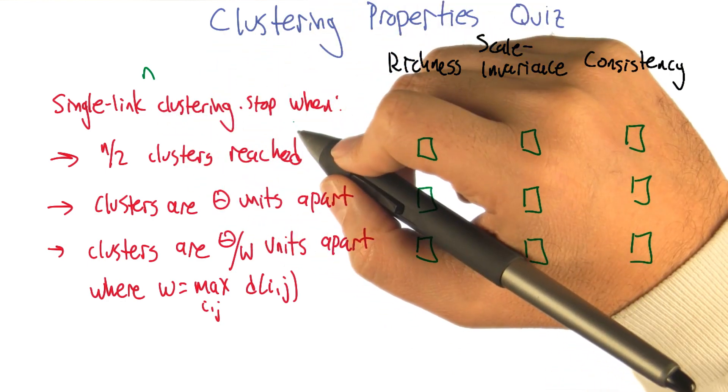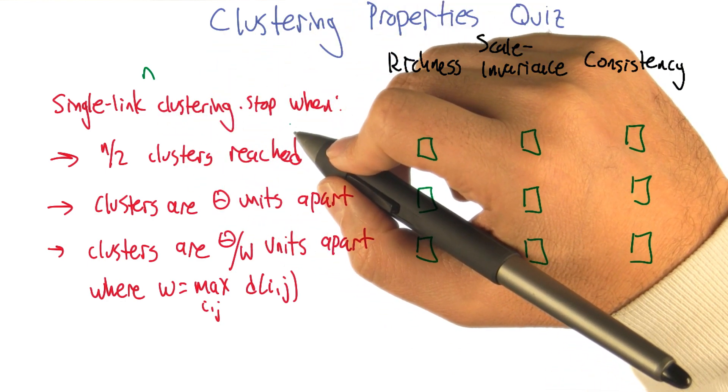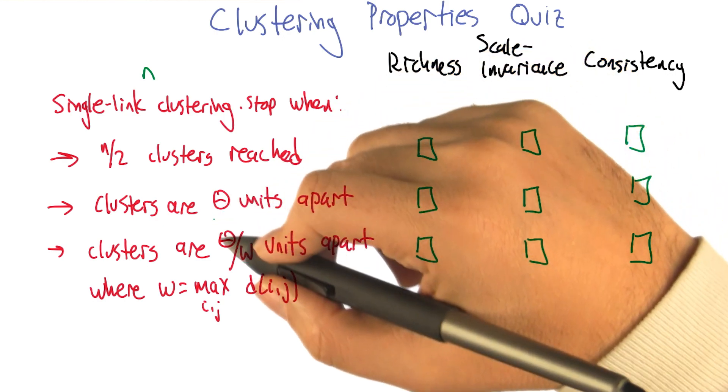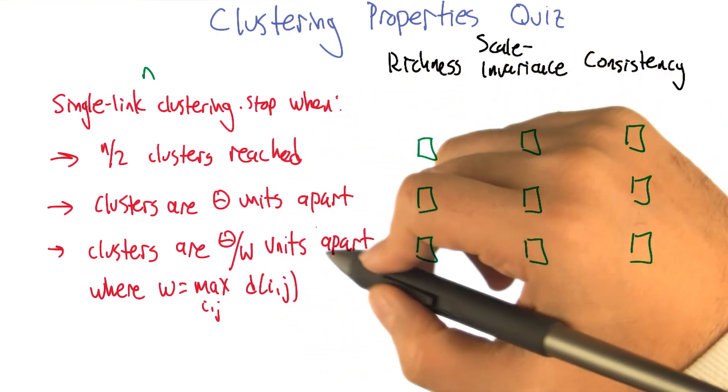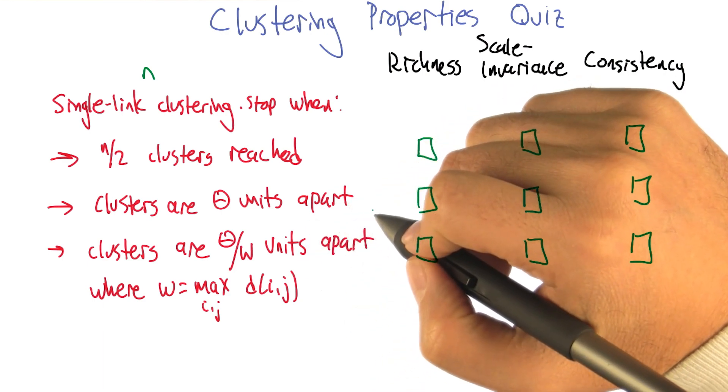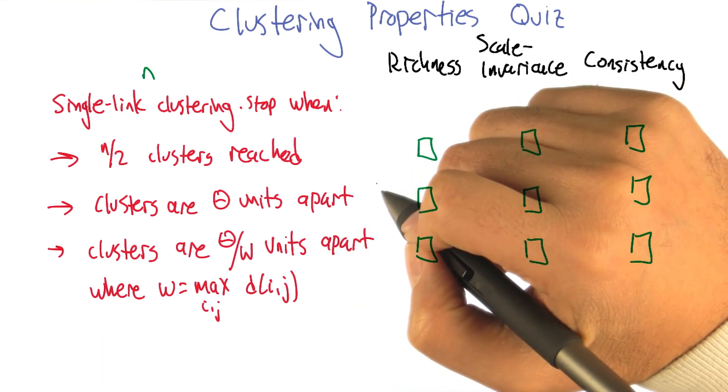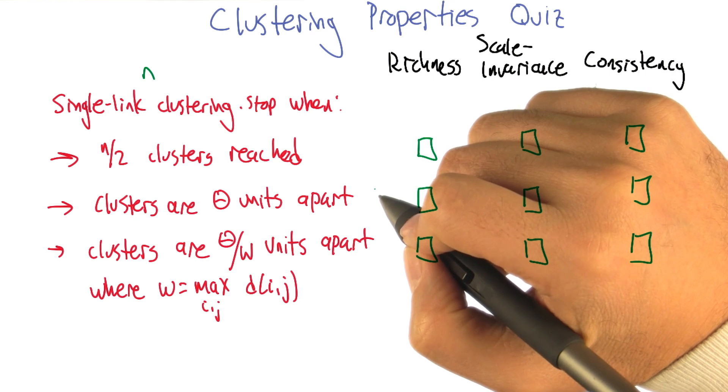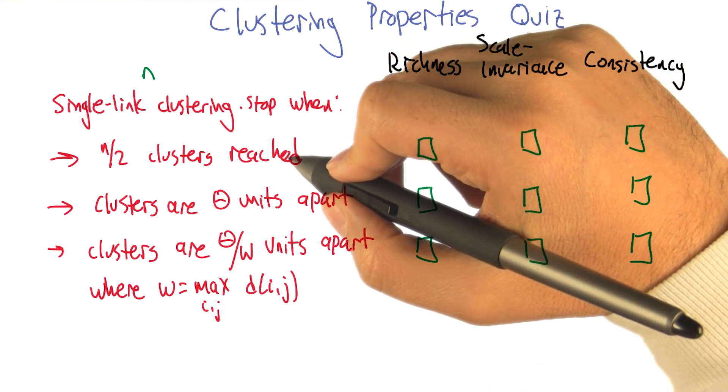All right, and you remember enough about single link clustering for that to be meaningful, but it's where we're going to start off with everything in its own cluster and then merge them together by whatever two clusters are closest together. And then iterate. Okay. All right. So that's algorithm one. We're going to stop at n over two clusters.